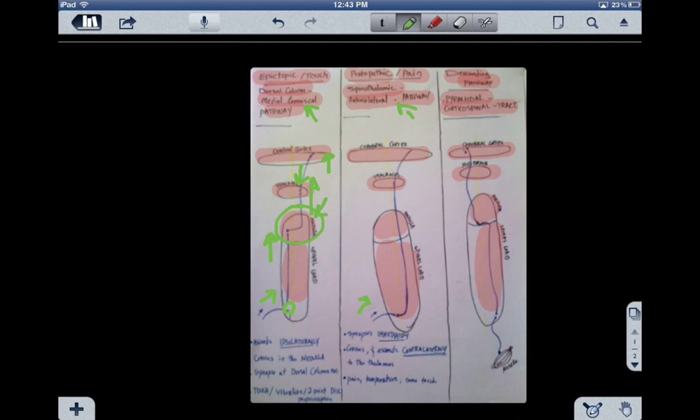we immediately decussate rather than just ascend ipsilaterally. See here? Immediately there is decussation that we move from the left to the right, and we ascend from there. So, immediate decussation, and ascend contralaterally—that means the opposite side.